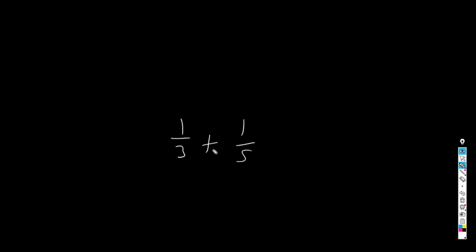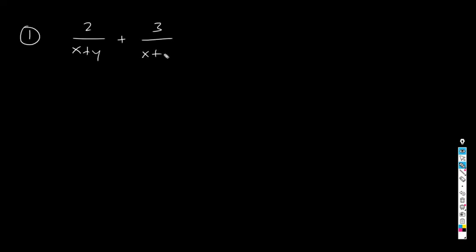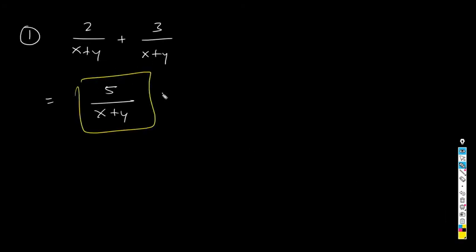Now let's apply these ideas to algebraic fractions — it works exactly the same way. Example 1: 2/(x + y) + 3/(x + y). These two algebraic fractions share the same denominator, so this is the simplest case. We just add the numerators: 2 + 3 = 5, over the same denominator (x + y). Done.